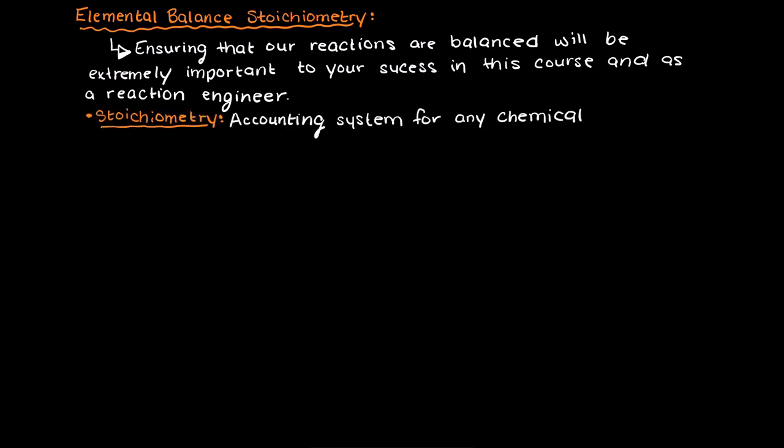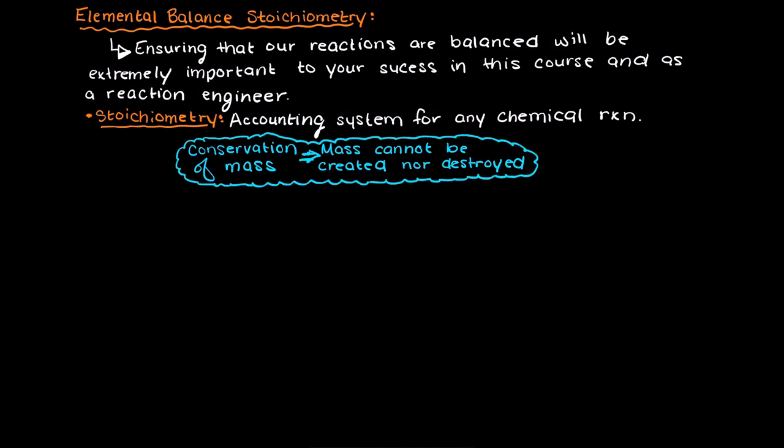Stoichiometry is essentially the accounting system for any chemical reaction. Mass cannot be destroyed or created, therefore every single atom into and out of our reaction must be the exact same.